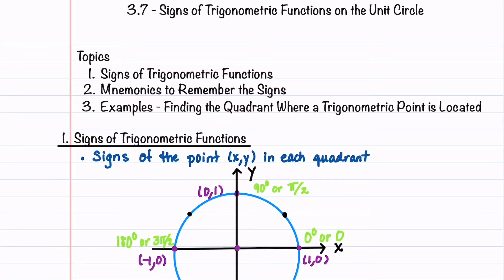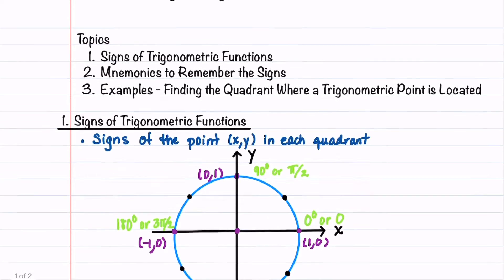To determine the sign of all six trigonometric functions in each quadrant, we'll first look at the signs of x and y in each quadrant, and then relate cosine, sine, and tangent to x and y.